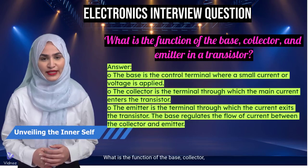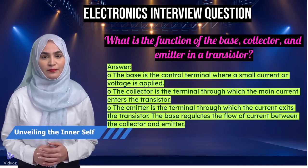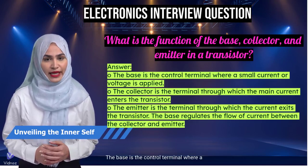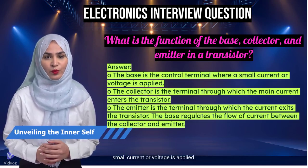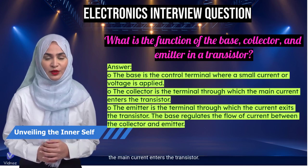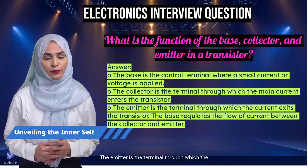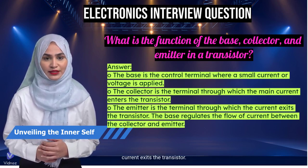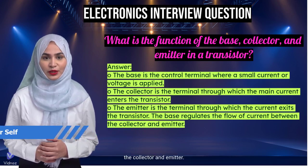What is the function of the base, collector, and emitter in a transistor? The base is the control terminal where a small current or voltage is applied. The collector is the terminal through which the main current enters the transistor. The emitter is the terminal through which the current exits the transistor. The base regulates the flow of current between the collector and emitter.